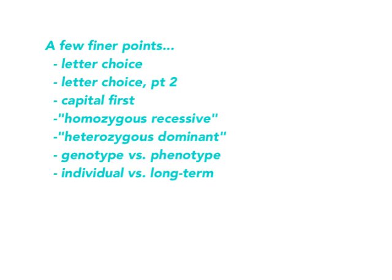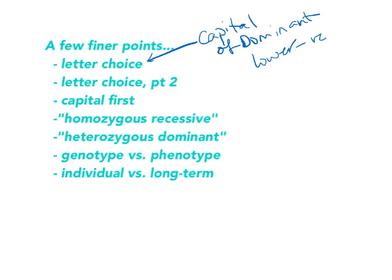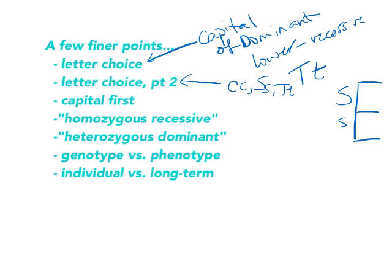A couple of finer points about setting these up. For letter choice: whenever we pick letters, we pick the dominant phenotype — like red — use the capital letter of that, and then lowercase of the same letter for recessive. That's why when we do tall and short, tall is dominant and short is not an S — it's a lowercase t. Also be careful of certain letters that look the same when written big versus small; sometimes you'll need to make your capital letters more distinct to tell them apart.